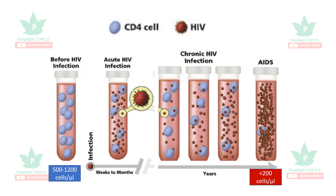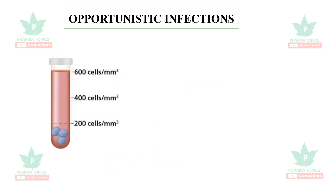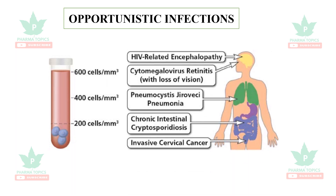When the CD4 cells reduce below 200 cells per mm³ or per microliter, it leads to several opportunistic infections. These include HIV-related encephalopathy, which affects the brain, and cytomegalovirus retinitis, which affects the eyes and causes loss of vision.